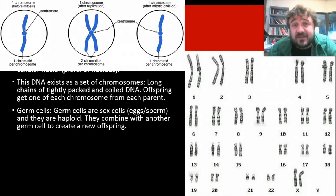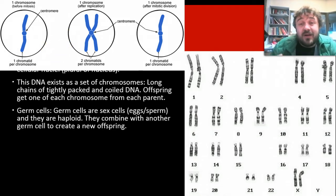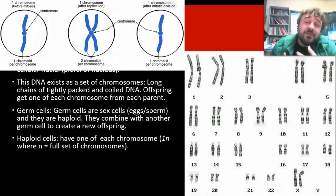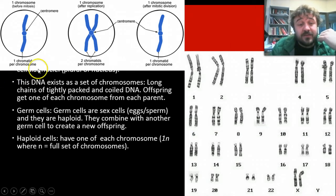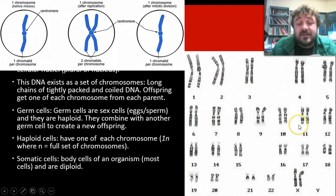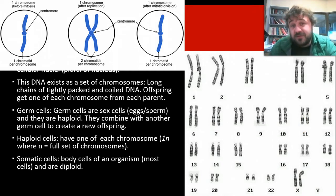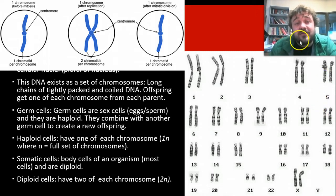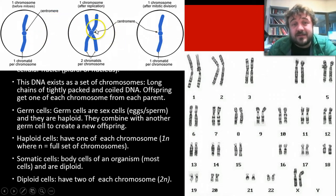Germ cells are essentially sex cells — so eggs and sperm — and they are what we call haploid. They combine together to create a new offspring. A haploid cell has one copy of each chromosome; they are one N, where N is a full set of chromosomes. Somatic cells are your body cells of the organism — pretty much all the rest of your cells — and they're all diploid, meaning they have two sets of each chromosome. They are 2N.